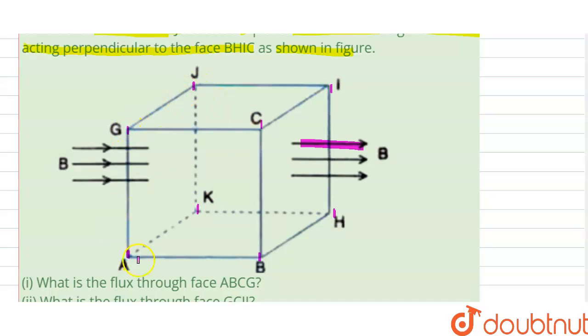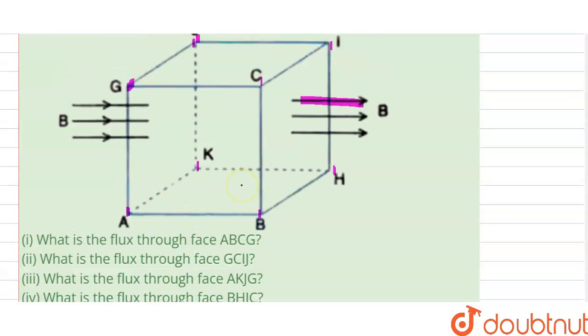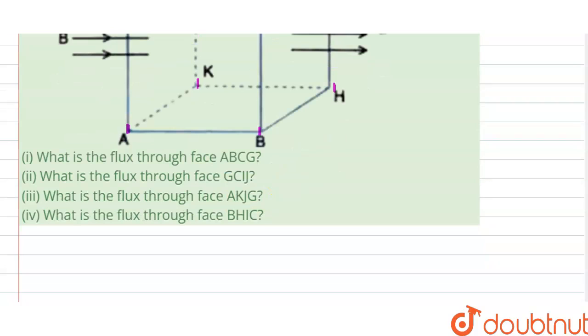Now we have to find as per this question what is the flux through face AVCG. First we need to understand the expression for flux. Basically flux equals B dot A.